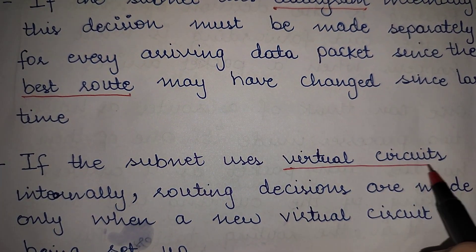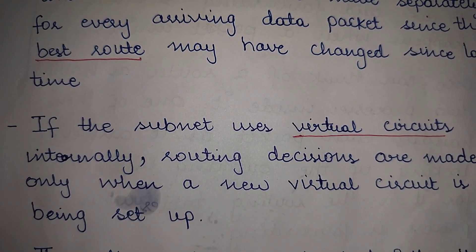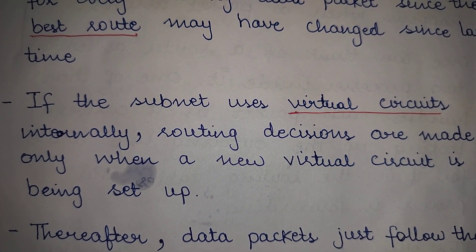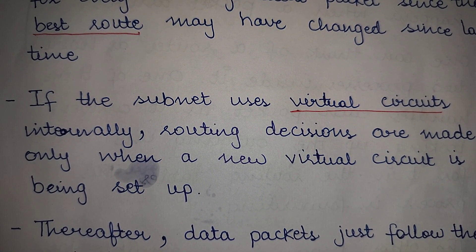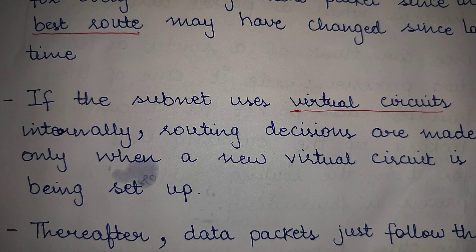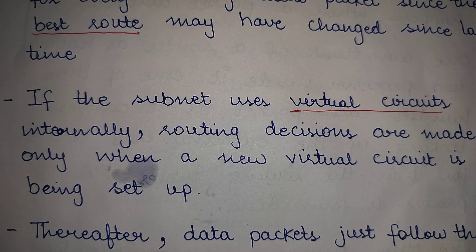If this subnet is using virtual circuits internally, then routing decisions are made only when a new virtual circuit is being set up. The routing decision would be made only once, at the time of connection establishment — which would be the best route for transferring data for this particular connection. From there on, all data packets would choose the same path.